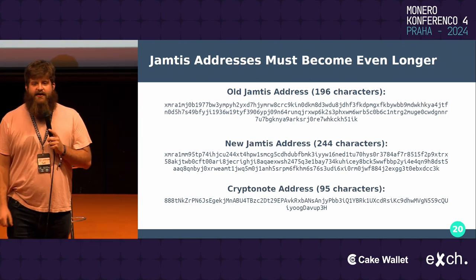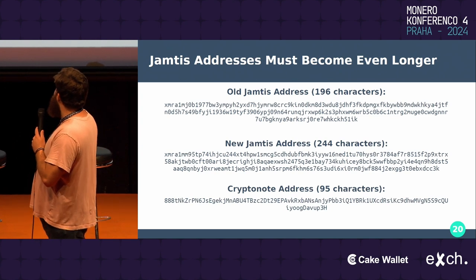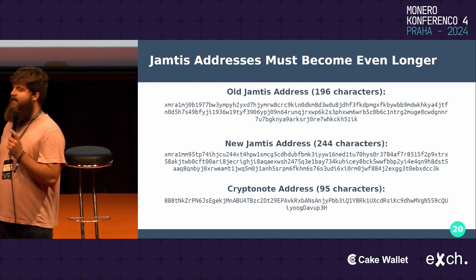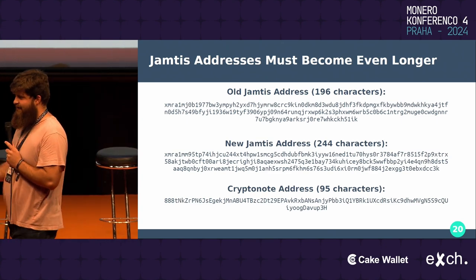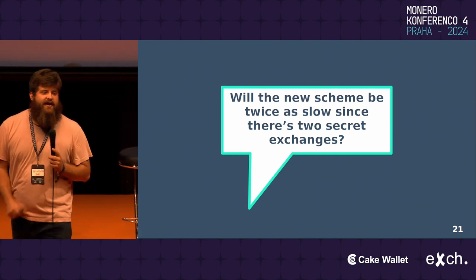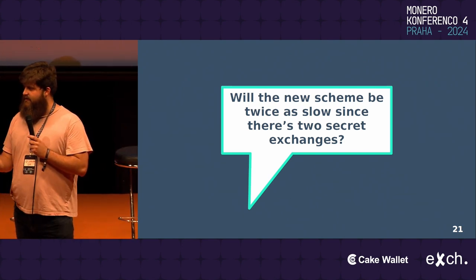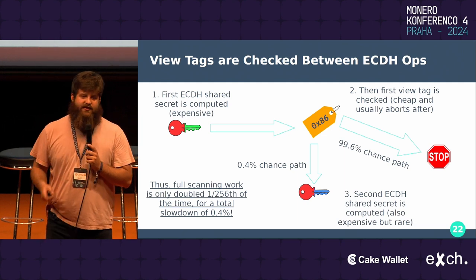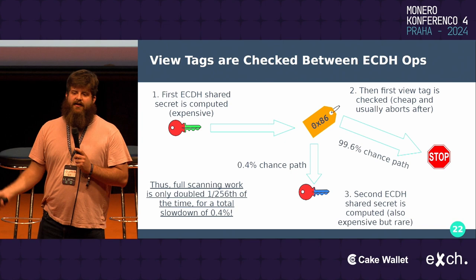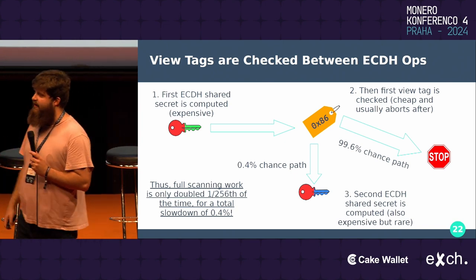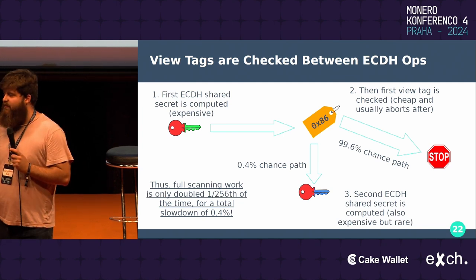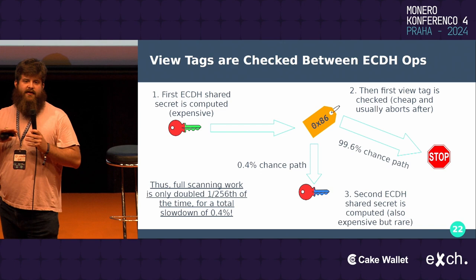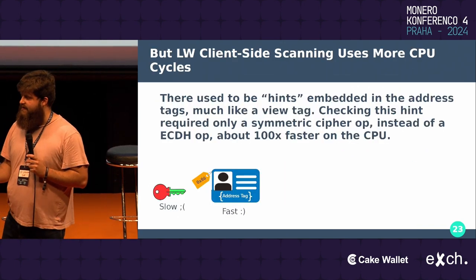This does require an increase to the size of the addresses. So we go from the CryptoNote address on the bottom, to what it would have been with the older Jamtis scheme, to the new Jamtis scheme — quite a bit bigger, but it still fits in a tweet. A good question would be: now that we're doing two shared secret exchanges, is this going to be twice as slow? No. Because we check view tags in between the two shared secrets, we actually only check the second one about 1 in 256 times, assuming a one-byte view tag. That ends up making it only about 0.4% slower. To clarify, that's for full wallet scanning — if you never use a LightWallet server, this feature will only set you back 0.4% in scanning time.